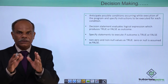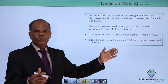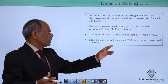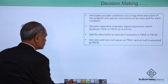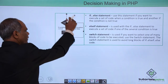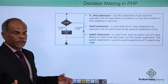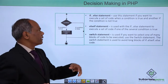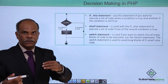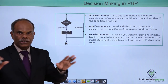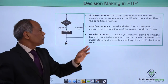When evaluating a logical expression, the thumb rule is that non-zero and non-null values will be treated as true, and 0 or null is treated as false. There are three different statements that allow the programmer to use conditional execution: if-else, else-if, and switch.